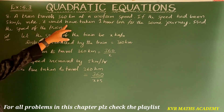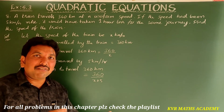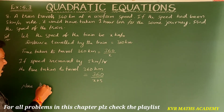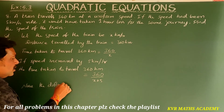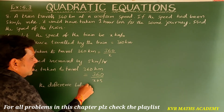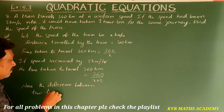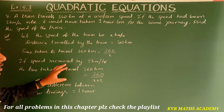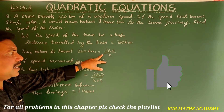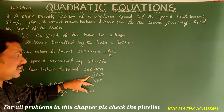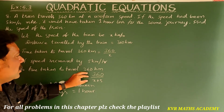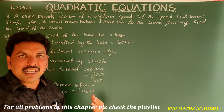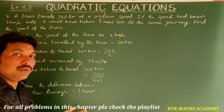It would have taken 1 hour less, so the difference between the two timings will be 1 hour. The original time is 360 by X, and the increased-speed time is 360 by (X plus 5). Traveling at the higher speed takes 1 hour less, so the difference between the two timings is 1 hour.